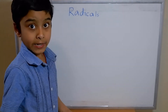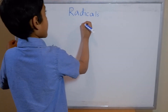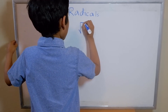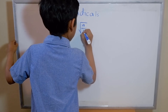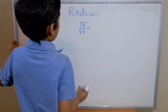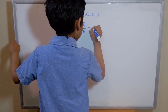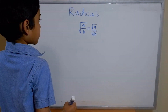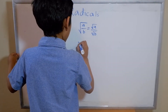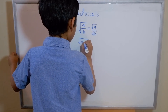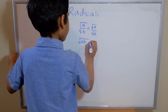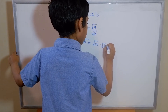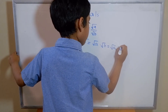Now let's look at the rules of radicals. For an example, the square root of A divided by B is the same as the root of A divided by the root of B. And if we have the root of A times B, it will be equal to the root of A times the root of B, which can be written as root A times root B.